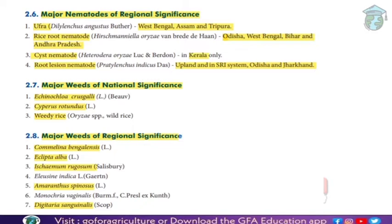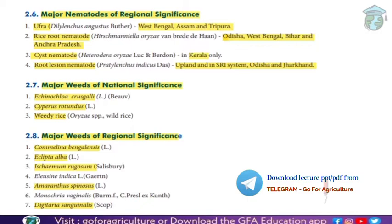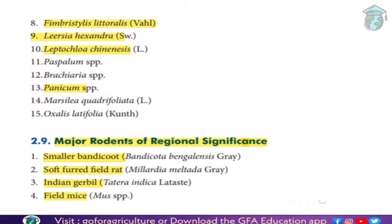Rice root nematode is found in Odisha, West Bengal, Bihar, and Andhra Pradesh. Cyst nematode is only in Kerala, and root lesion nematode is found in upland and SRI system areas of Odisha and Jharkhand. Major weeds of national significance include Echinochloa, Cyperus rotundus, and weedy rice. Major weeds of regional significance include Commelina benghalensis, Eclipta alba, Amaranthus, Digitaria, Leptochloa chinensis, Panicum, Brachiaria, Paspalum, Oxalis latifolia, etc. Major rodents include the smaller bandicoot rat, soft-furred field rat, Indian gerbille, and field mice.